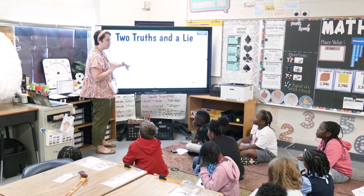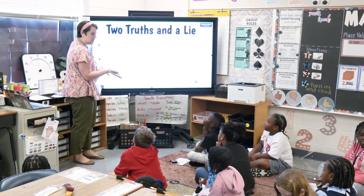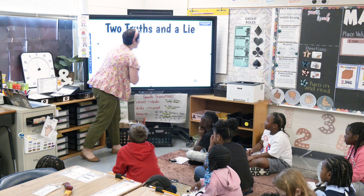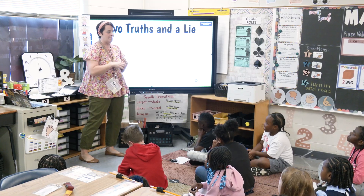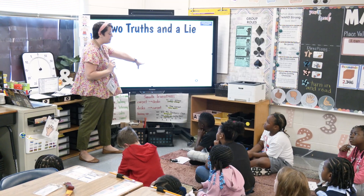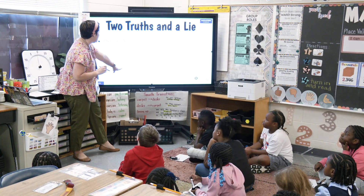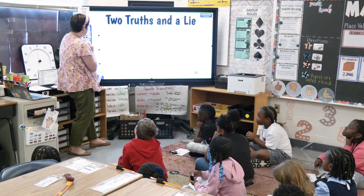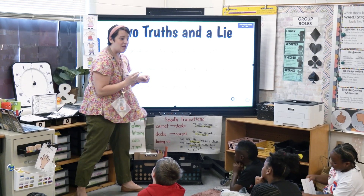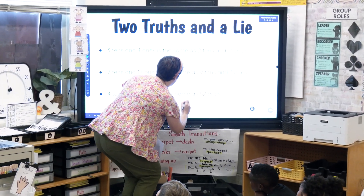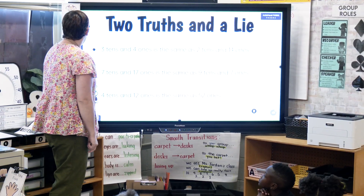Let's look at the second one: seven tens and seventeen ones. We also have to exchange, so we take the ten and put it over here — really we have eight tens and seven ones. What number is that? 87. Is that the same as nine tens and seven ones? That's 97. This is saying 87 is equal to 97 — no, that's a lie. In math, that's our symbol for equal. Soon we will learn that this is the symbol for not equal. Last one: four tens and twelve ones — again we have to exchange, so that turns into a five and it will be 52. It's the same as 52 ones, which is 52. So that's true. So the second one is the lie, and the first and third statements are true.